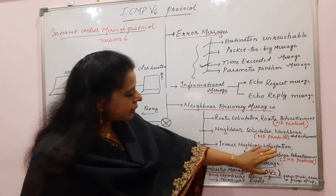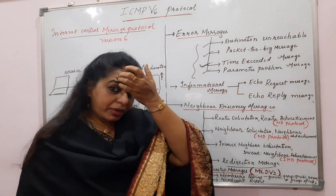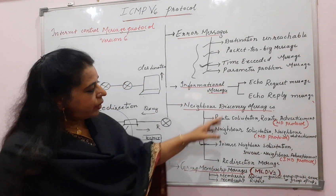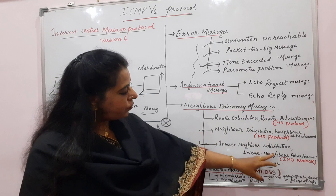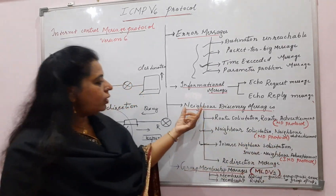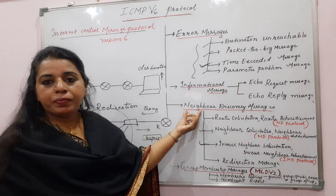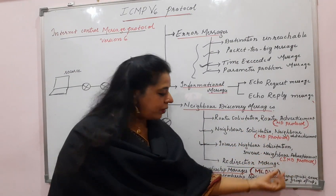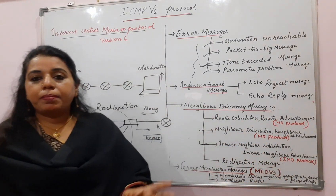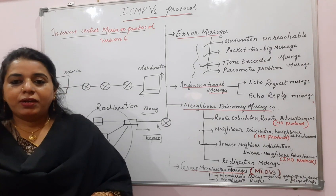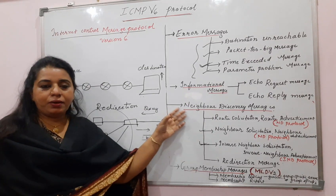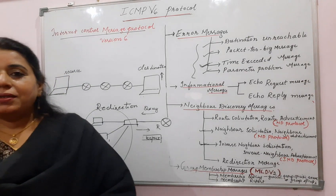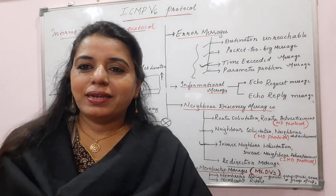The inverse neighbor solicitation and inverse neighbor advertisement pair makes use of the inverse neighbor discovery protocol. So under the neighbor discovery category, three protocols are used: the neighbor discovery protocol, the inverse neighbor discovery protocol, and the multicast link discovery protocol. I hope this session is useful to you all. Thank you, bye bye, take care.